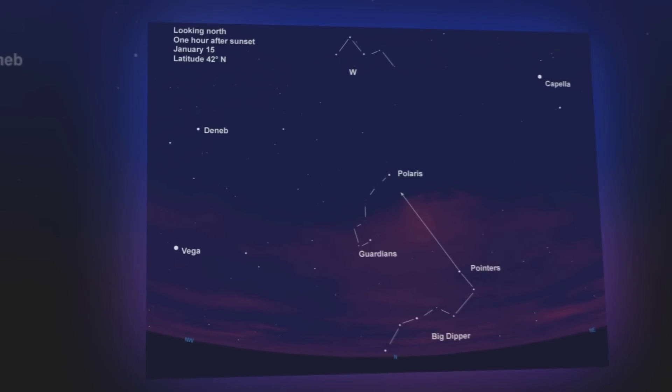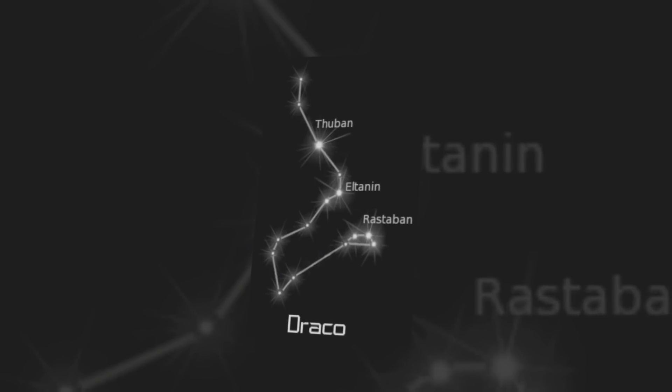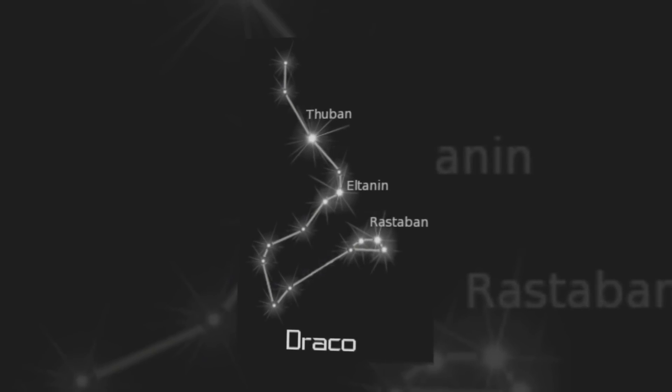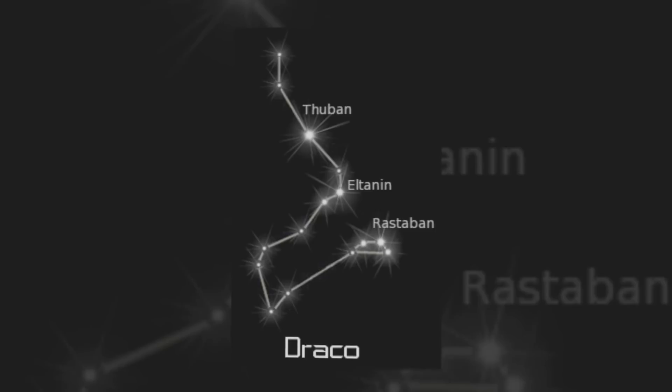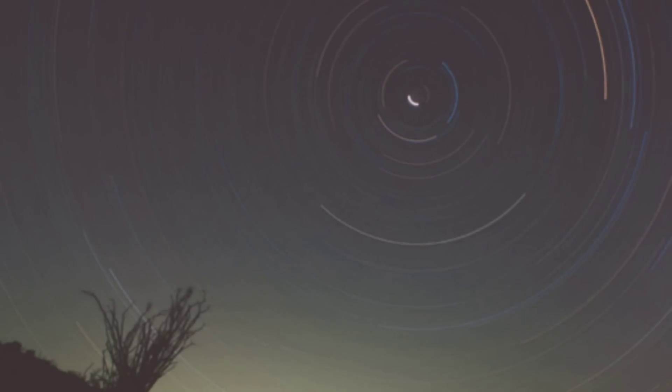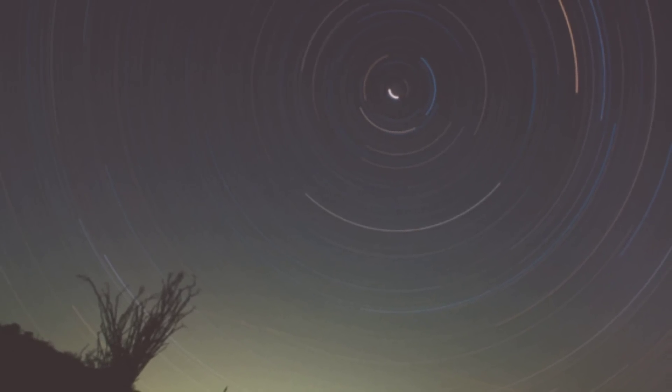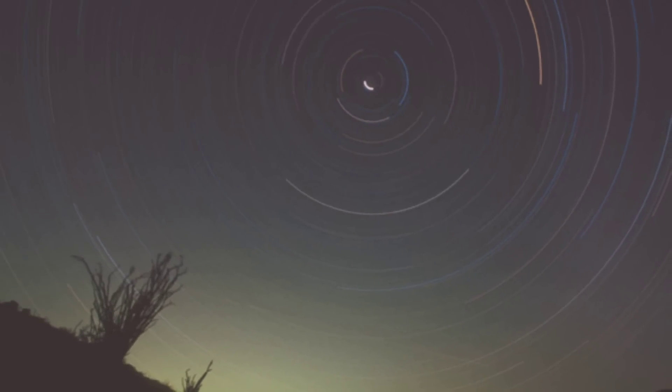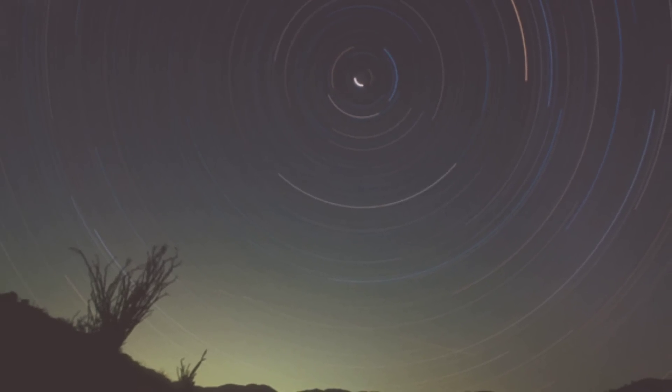Polaris hasn't always been the North Star and won't remain the North Star forever. For example, a famous star called Thuban in the constellation Draco the Dragon was the North Star when the Egyptians built the pyramids. But our present Polaris is a good North Star because it's the sky's 50th brightest star, so it's noticeable in the sky. It served well as the North Star for it helped when the Europeans first sailed across the Atlantic over five centuries ago.